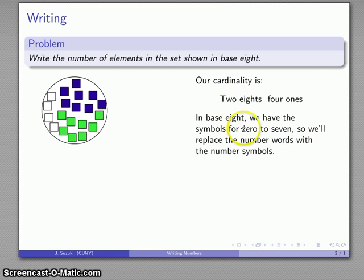I can replace the number words for zero through seven with the corresponding number symbols. To avoid overcomplicating things, we'll just use our standard symbols. I know how to write two and I know how to write four, and I have my partial transition to a purely symbolic expression of the numerical amount.